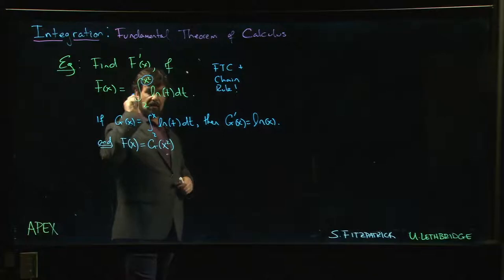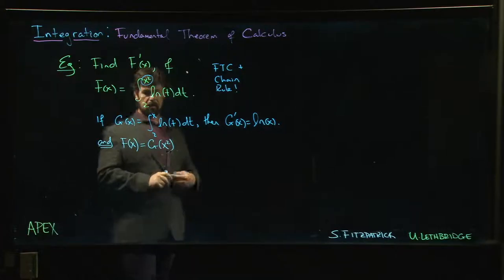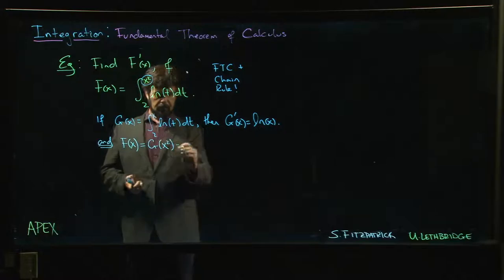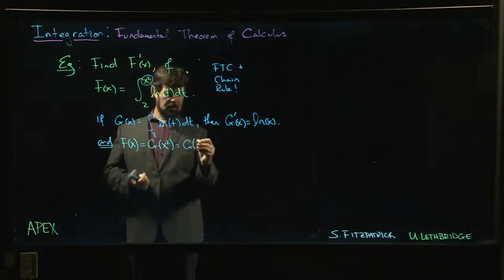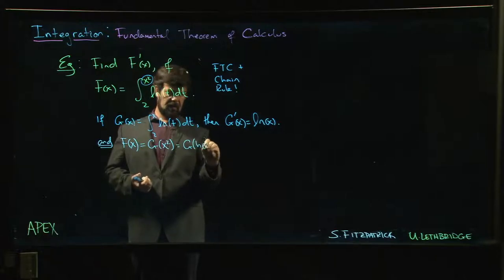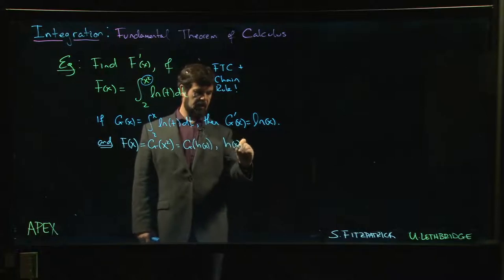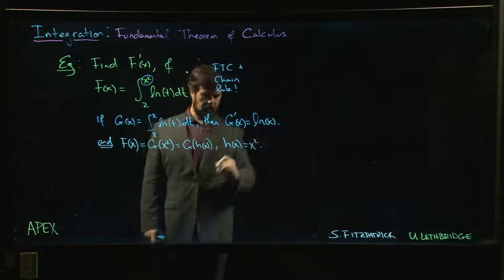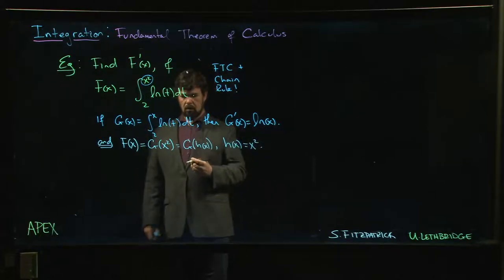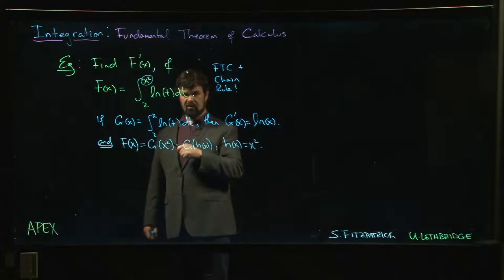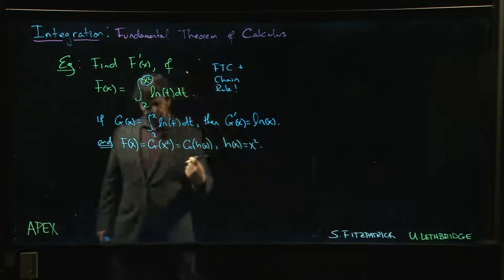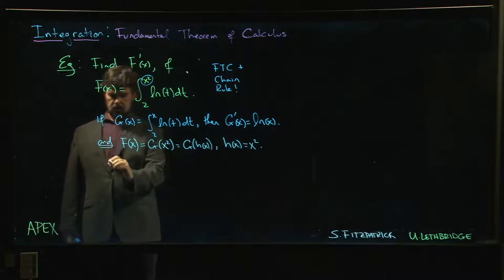So this is G of—I don't know, let's call it maybe H—H of x, right? Where H of x equals x squared. But we don't take derivatives of things like this—that's chain rule, right? We learned that way back in chapter 2.